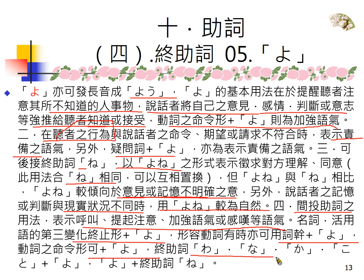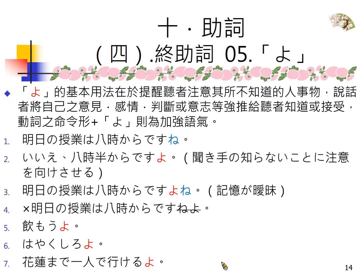名词和动词原则上用原型来接よ，但形容动词有时候可以用词干直接接よ。动词的命令型也可以加よ。よ可以跟其他的终助词重叠使用，如わ、な、か、こと，可以加よ，要接在よ前面；它可以重叠在ね这个终助词前面，顺序不可以颠倒。同学听到这里不用紧张，我们一个一个再详细举例说明。